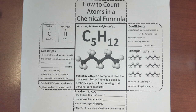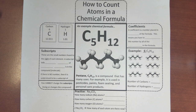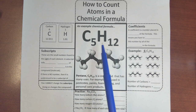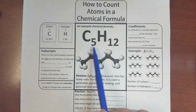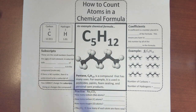All right, today we're going to talk about how to count atoms in a chemical formula. We're going to start with a full sheet of paper — this is actually going to be a foldable by the end of class. We're going to fill it all out, do some practice, and then cut and glue the pieces together. In the very middle you'll see an example of a chemical formula: C5H12.